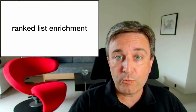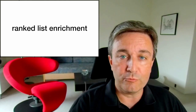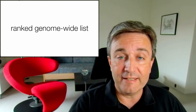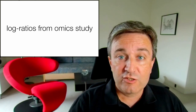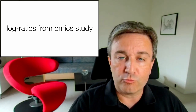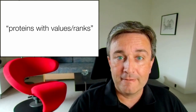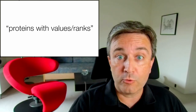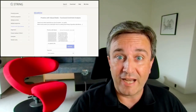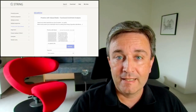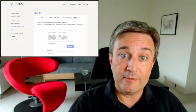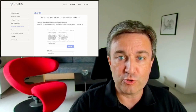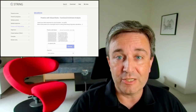The second way of doing enrichment is ranked list enrichment. In this case, you provide a ranked genome-wide list, typically in the form of log ratios from some omics study. You input these via the search option called Proteins with Values or Ranks. The interface looks like this — you can either paste in the data or upload a file, which is typically what you would want to do when it's a genome-wide list.